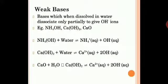For weak bases, when dissolved in water they dissociate only partially to give OH− ions, making the dissociation reversible — shown with double-sided half arrows. Examples include ammonium hydroxide (NH4OH), calcium hydroxide (Ca(OH)2, also called slaked lime or lime water), and calcium oxide (CaO, quick lime). Ammonium hydroxide dissolved in water gives one ammonium ion (NH4+) plus one OH− ion.